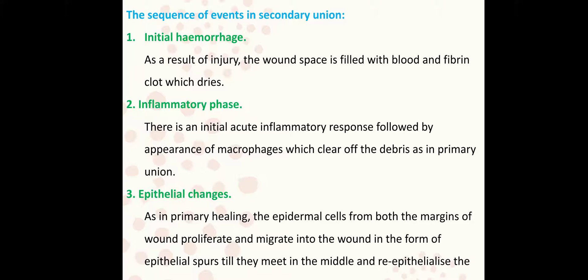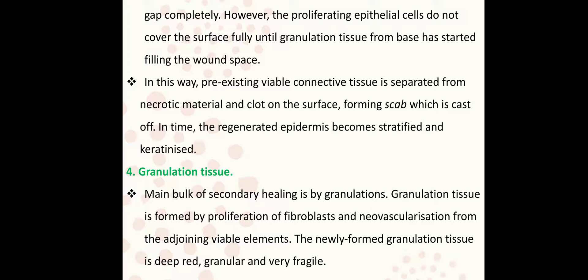The sequence of secondary healing: first is initial hemorrhage — as a result of injury, the wound space is filled with blood and fibrin clot, which dries to form a scab. Second is the inflammatory phase, similar to the epithelial changes in primary healing. The viable connective tissue is separated from the necrotic material on the clot surface, forming a scab. The regenerated epidermis becomes stratified and keratinized.